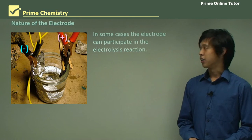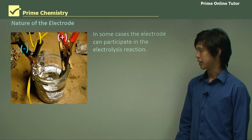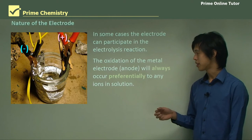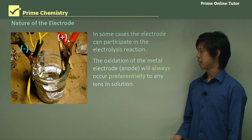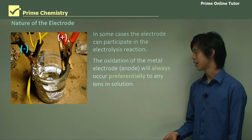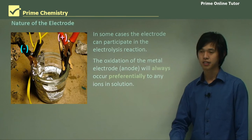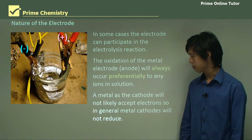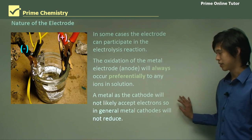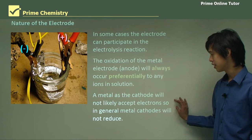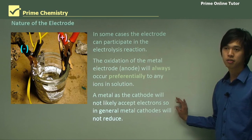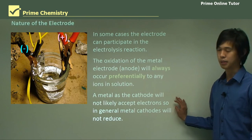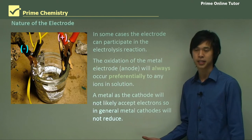Regarding the nature of the electrode: in some cases the electrode can participate in the electrolysis reaction. The oxidation of a metal electrode at the anode will always occur preferentially to any ions in solution. A metal used as the cathode will not likely accept electrons, because metals don't want to take in electrons — they're happy to give them to the ions, letting those ions become metal or a non-metal depending on what they are.